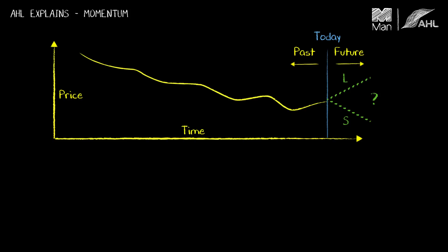So if prices have been going down recently, then there's a tendency for them to continue going down, and if prices have been going up recently, there's a tendency for them to continue going up. That's the basic idea that underpins these time series momentum models.